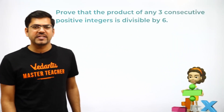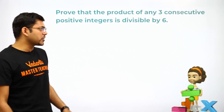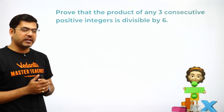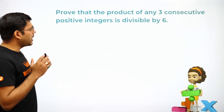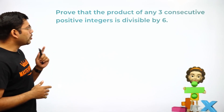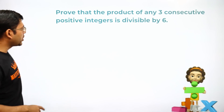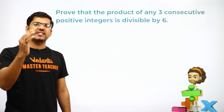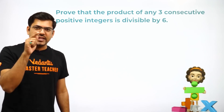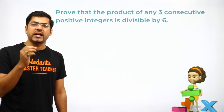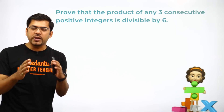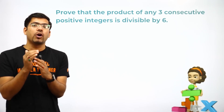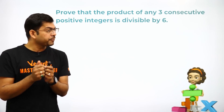Let's start today's session. The first question is a very important one from your examination perspective: prove that the product of any three consecutive positive integers is divisible by six. This is a very common question, but in this session I will even tell you how to write the steps. I am assuming this is a four-mark question.